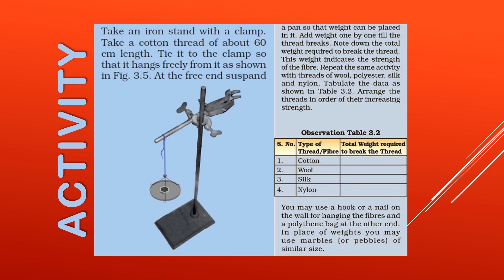Today we learned about synthetic fibers, and the four types we need to study are rayon, nylon, polyester, and acrylic. Rayon and nylon we have already studied, and in the next class we will learn about polyester and acrylic. Read the textbook well, try to find answers to the questions, and post any doubts in the school group.